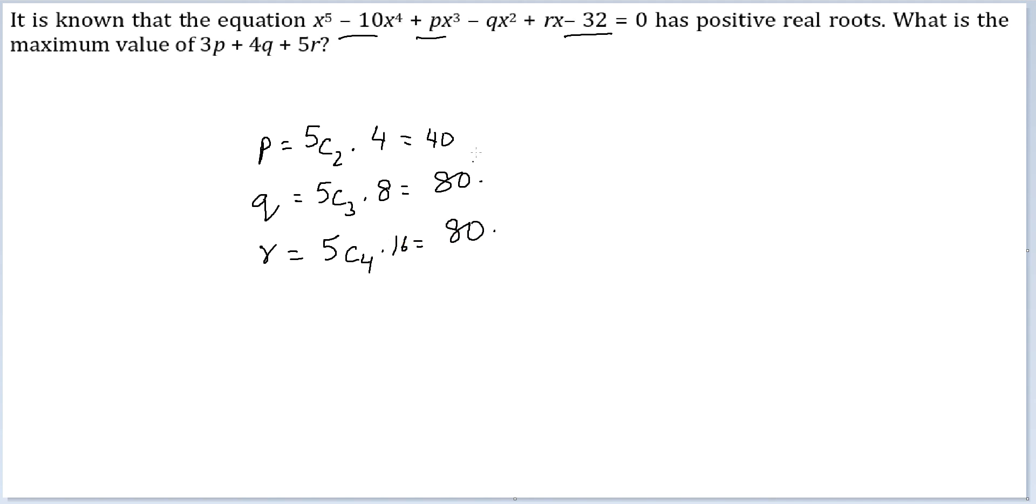Can I write this as 3 times of p + q + r plus q + q + r? I am more comfortable doing this. So summation of this is 200, 3 times of that is 600. q and r are identical, so 3 times 40 plus 80 plus 80. Final answer: 840 for this question.